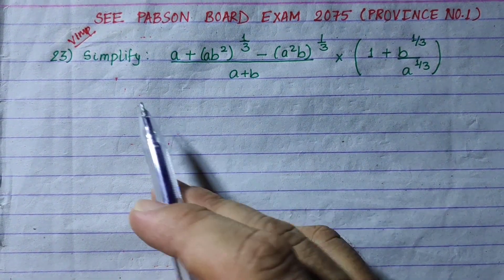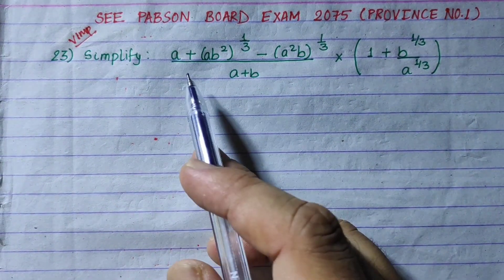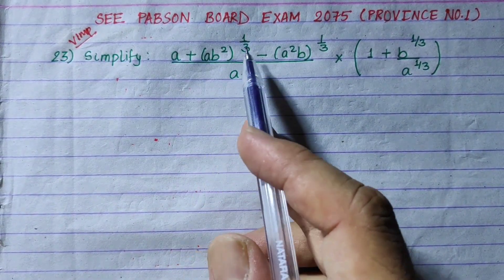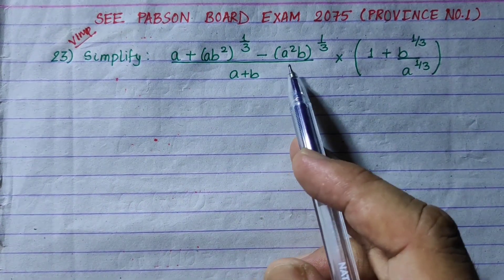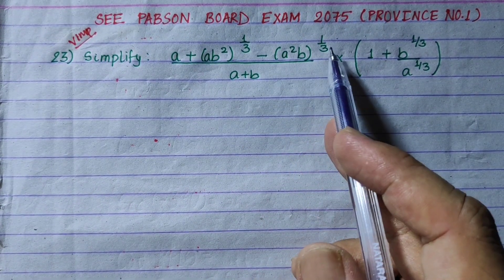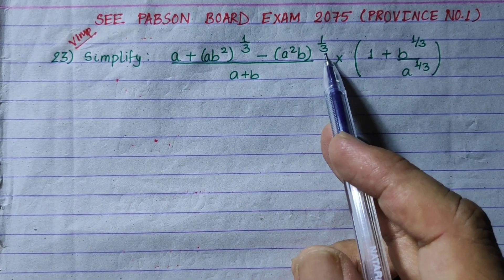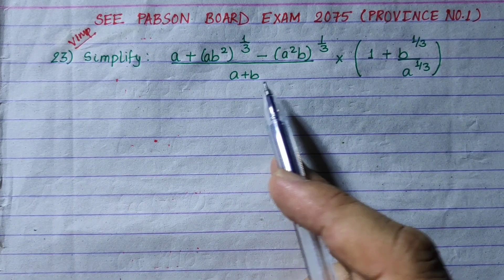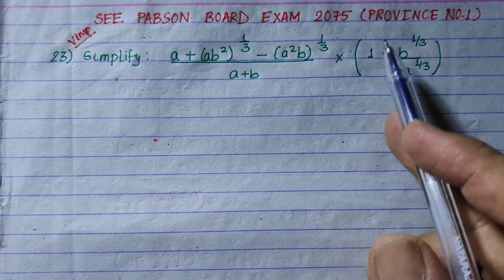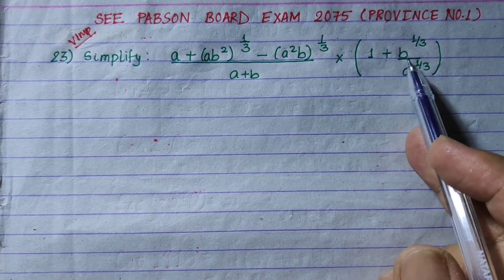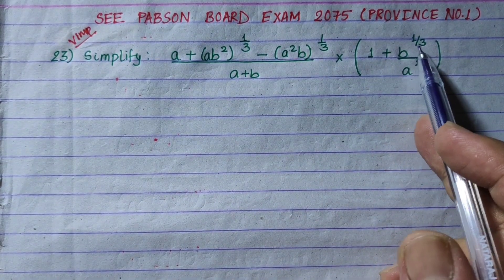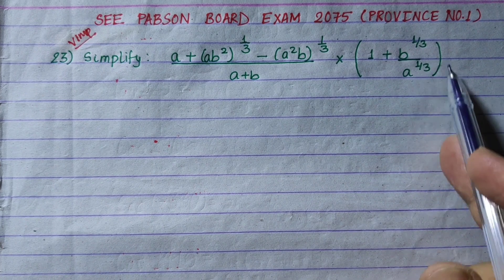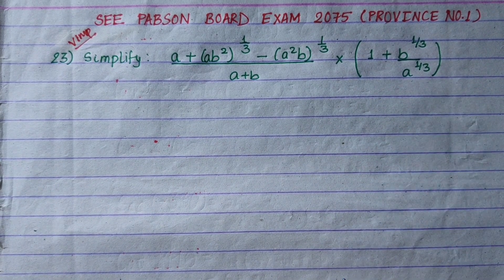The question is to simplify: (A plus AB squared) to the power 1/3, minus (A squared B) to the power 1/3, multiplied by (A plus B) into 1 plus B to the power 1/3 by A to the power 1/3, bracket close.